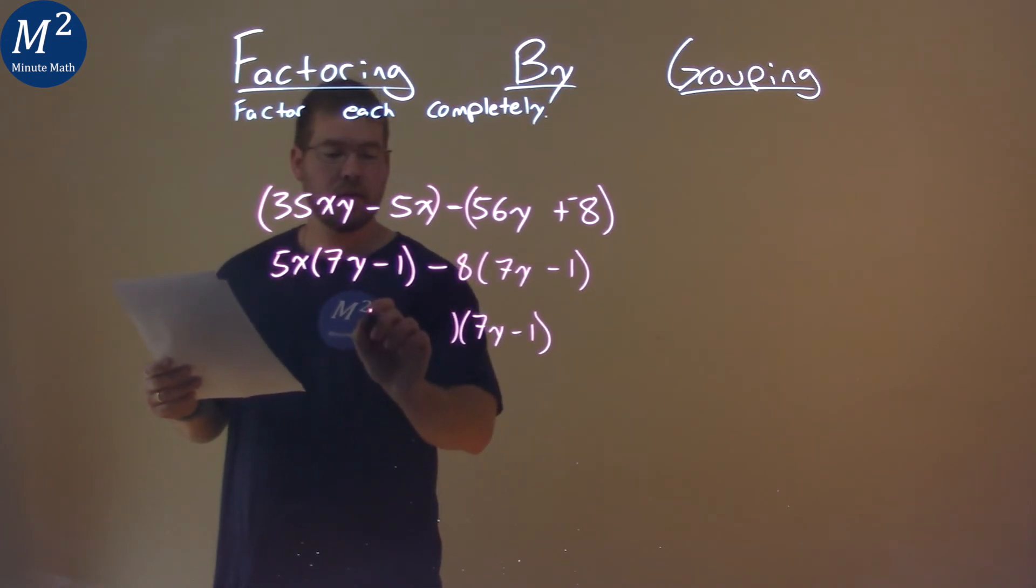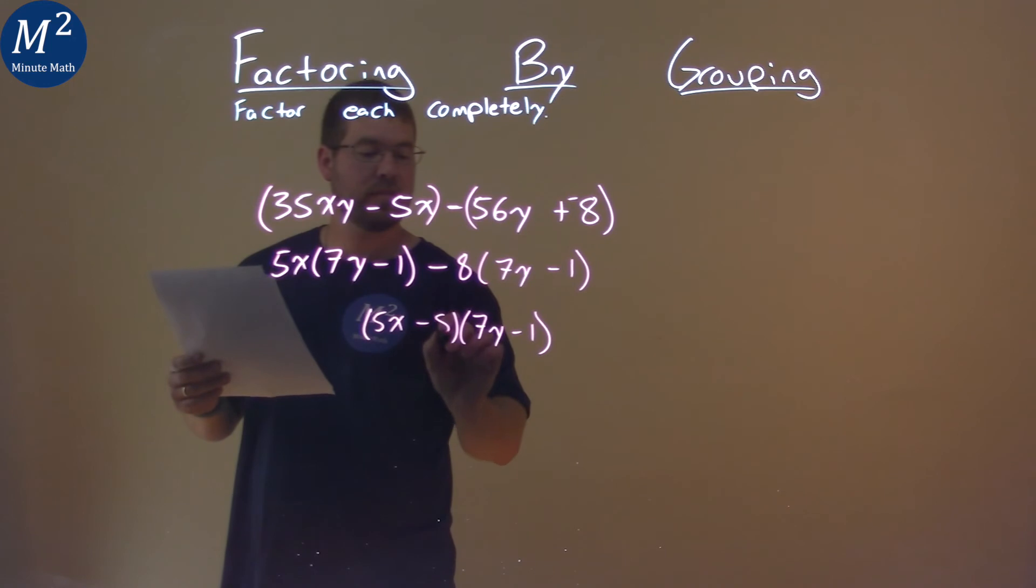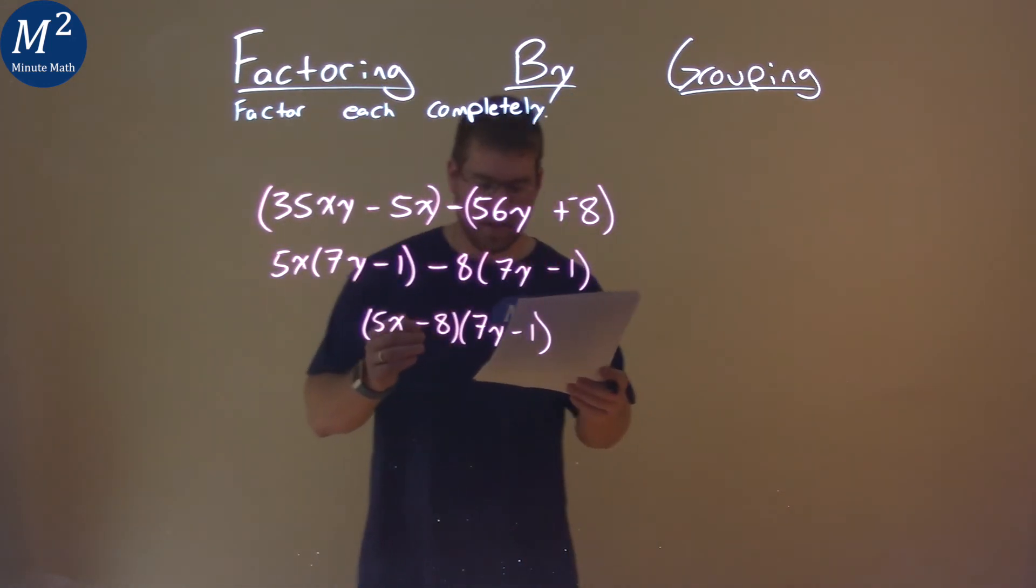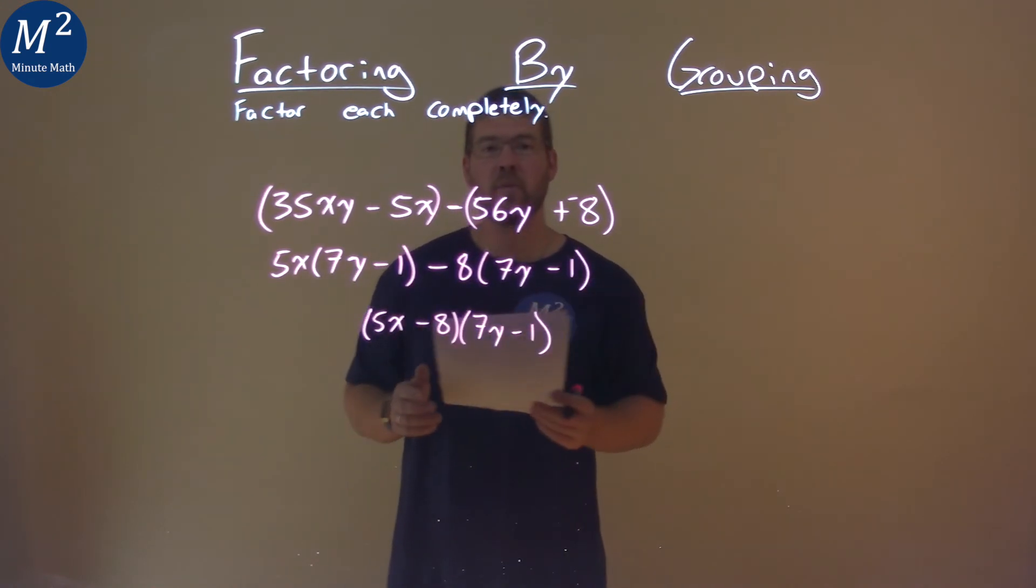Well, we need to multiply the first two parts here. So 5x minus 8, and there we have our final answer: 5x minus 8 times 7y minus 1.